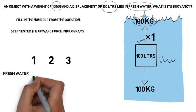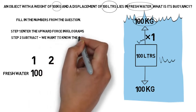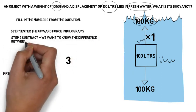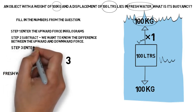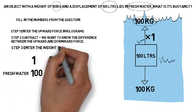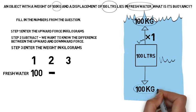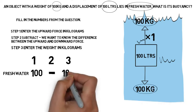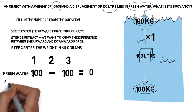Now for the three-step process: step one — enter the upward force of 100 kilograms. Step two — put a subtract sign, because we are calculating the difference between upward and downward force. Step three — enter the downward force, the weight of the object: 100 kilograms. So 100 minus 100 equals zero — this object is neutrally buoyant, staying in the middle of the water column.